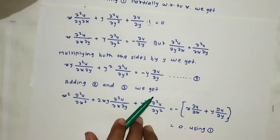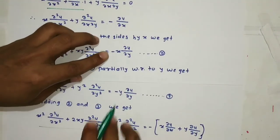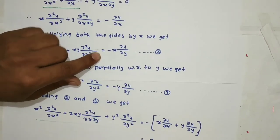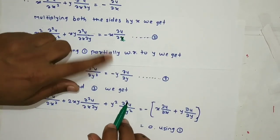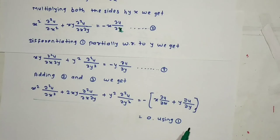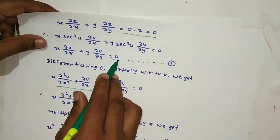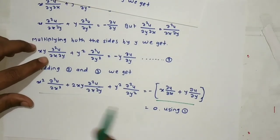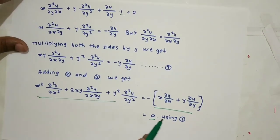Adding equations 2 and 3: x² ∂²u/∂x² + 2xy ∂²u/∂x∂y + y² ∂²u/∂y² = -x · ∂u/∂x - y · ∂u/∂y = -(x · ∂u/∂x + y · ∂u/∂y). Using equation 1, which gives x · ∂u/∂x + y · ∂u/∂y = 0, we get the total value as 0. Hence the required expression equals 0.